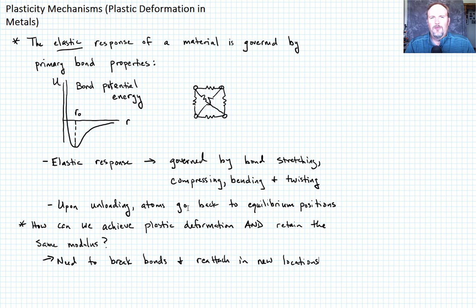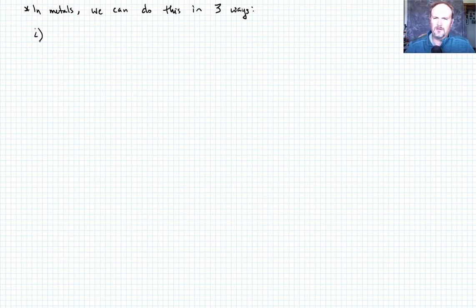So how do we do this? Well, in the case of metals, which is the topic of what we're going to talk about today, there are actually three ways that we can do this, or three primary ways. And so we'll begin talking about them. So let's just say in metals, we can do this in three ways. The first way is by the motion of individual dislocations. So we can have a dislocation, we'll call it dislocation glide, or dislocation motion, or glide.